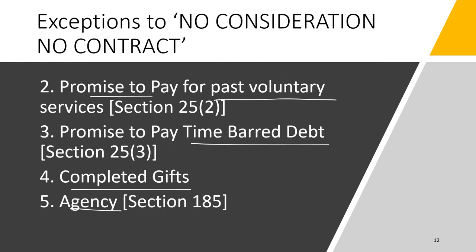Exception two under Section 25(2): promises to pay for past voluntary services. If someone voluntarily did something for you in the past without any contract, and you now promise to pay them for it, that promise is valid even without fresh consideration. The voluntary service itself forms the basis, and the promise to pay for it is a valid exception to the rule of no consideration, no contract.